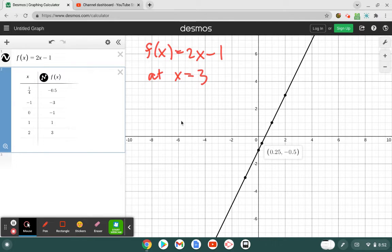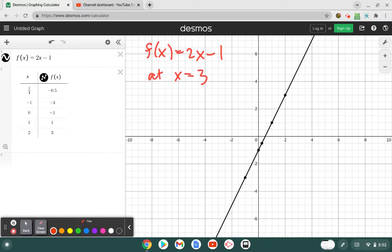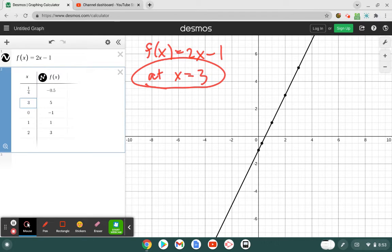Let's go ahead and go back to our evaluation problem. So I wanted to evaluate this guy at x = 3. Well, now I've got a couple ways that I can do that. I can put 3 into my table. Just type it right in, and it tells me that that's 5.